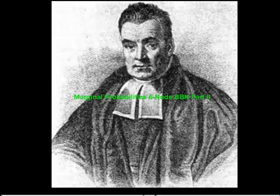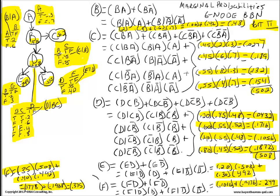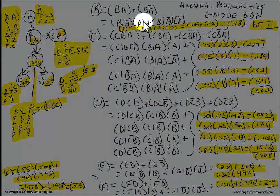Hi, this is Jeff from BayesTheorem-QED.com. This is part two of the marginal probabilities that I computed for the six-node Bayesian belief network. What I have highlighted in yellow are the additions to part one — these are the actual probabilities of the conditional probabilities. For example, we conducted an experiment and collected our probabilities: probability of A was 0.3 and not-A was 0.7.